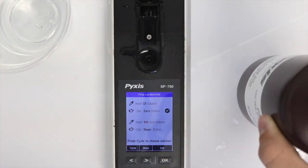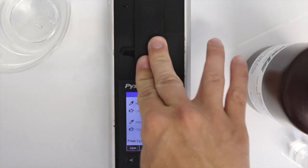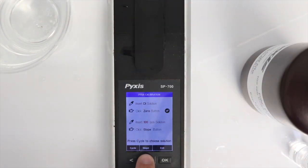Once the solution is applied, close the shield and use the right arrow key to select the slope button. A calibration success message will be displayed.